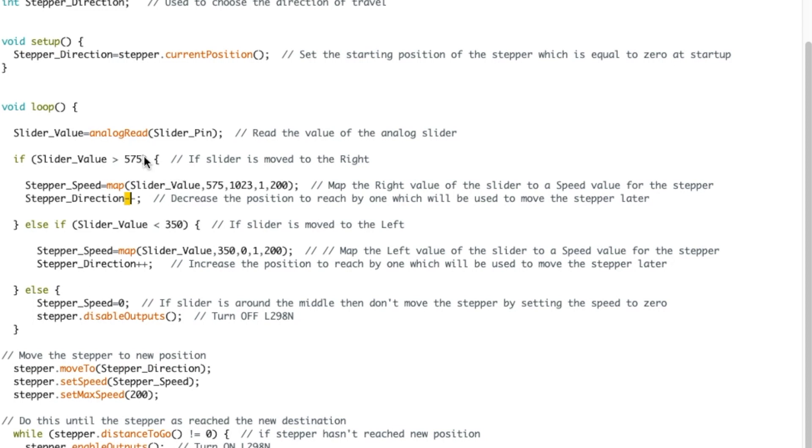Then I check if that's not true. Then I check if it's smaller than 350. Then I map that value for the speed. But this time the direction is plus plus. So if it was zero at the beginning, then becomes one. So that means it moves to the left.